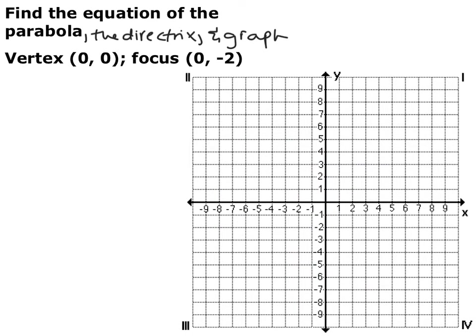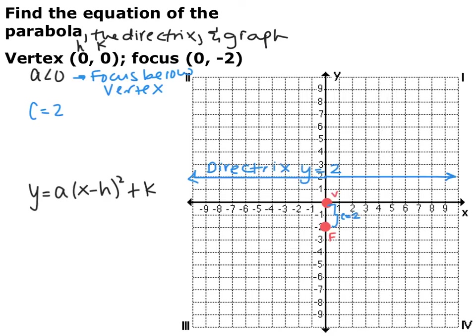We're given the vertex and the focus again. This time we want to find the equation of the parabola in addition to finding the directrix and graphing. Go ahead and pause the video, find the directrix, and graph what we already know. We're given that the vertex is at the origin and the focus is at (0, -2), which means it's a downward facing parabola. A is going to be negative because the focus is below the vertex. The distance between them is 2, so the directrix is 2 above the vertex — the directrix is y equals 2.